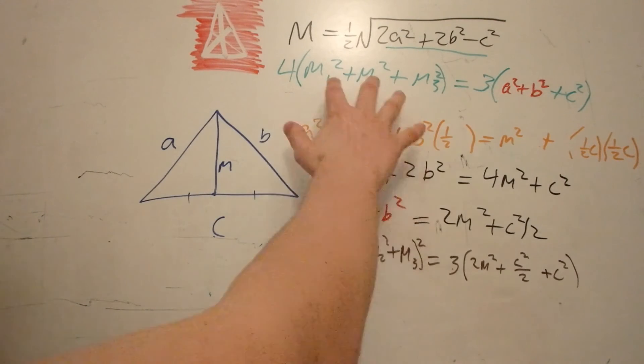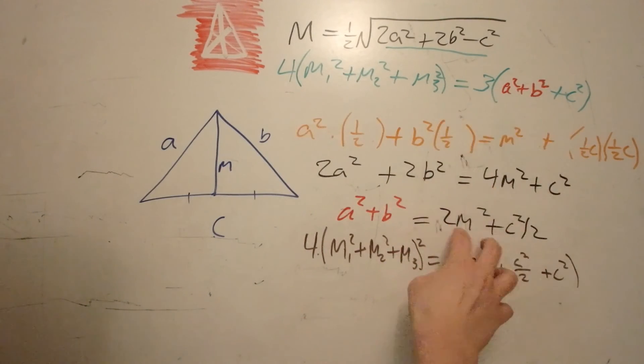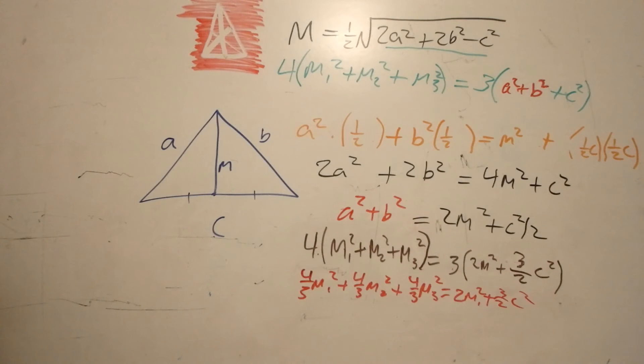So at this point, I took this equation, and I replaced the a squared plus b squared with 2m squared plus c squared halves, and then we're going to combine these two. So at this point, what I did is I divided both sides by 3, and I distributed the 4 thirds into these three terms.